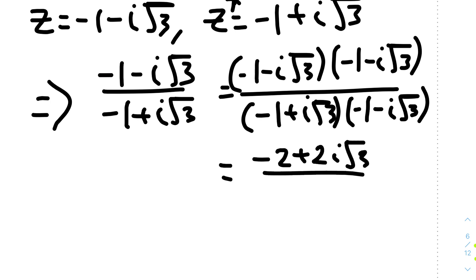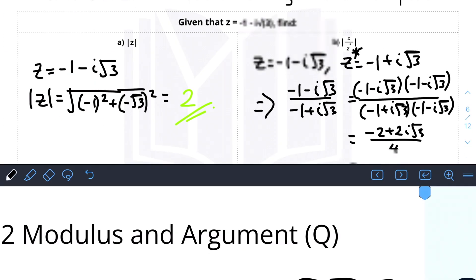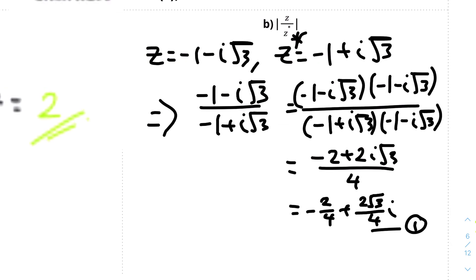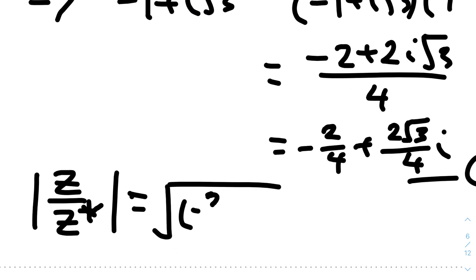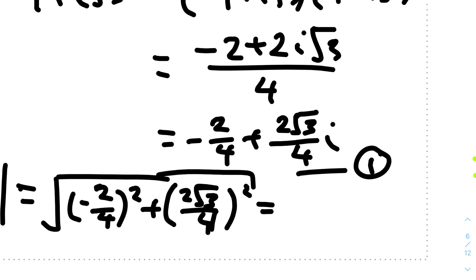Expanding the denominator gives us 4. Splitting into separate fractions: minus 2 over 4 plus (2 root 3 over 4)i. To find the modulus, we apply the Pythagorean formula: root of (minus 2 over 4) squared plus (2 root 3 over 4) squared. Putting this into the calculator gives us 1, which is quite a nice result. So the modulus of z over z asterisk is 1.